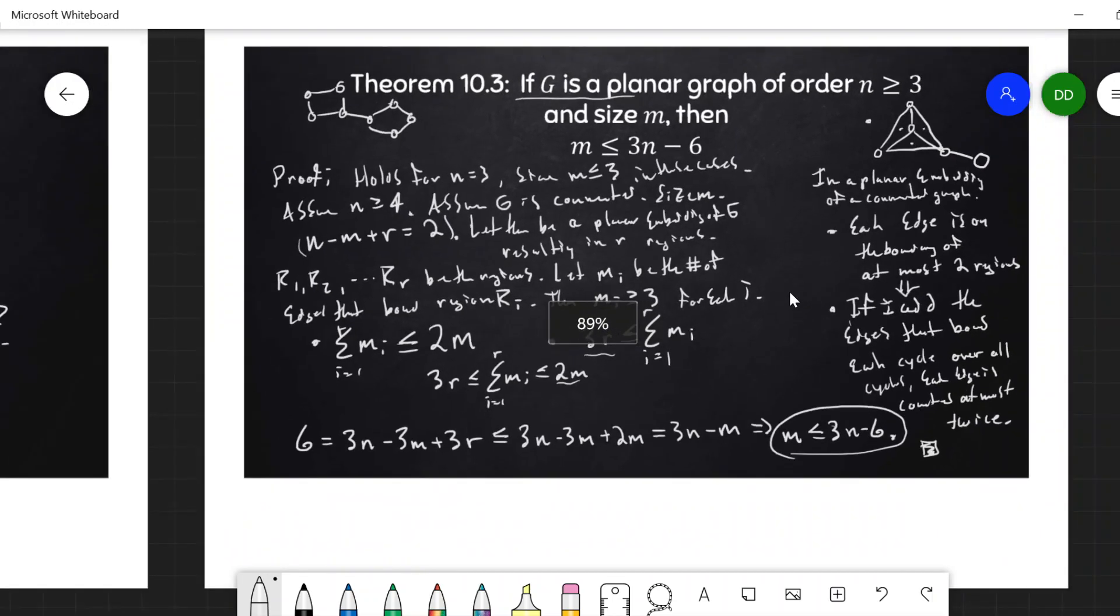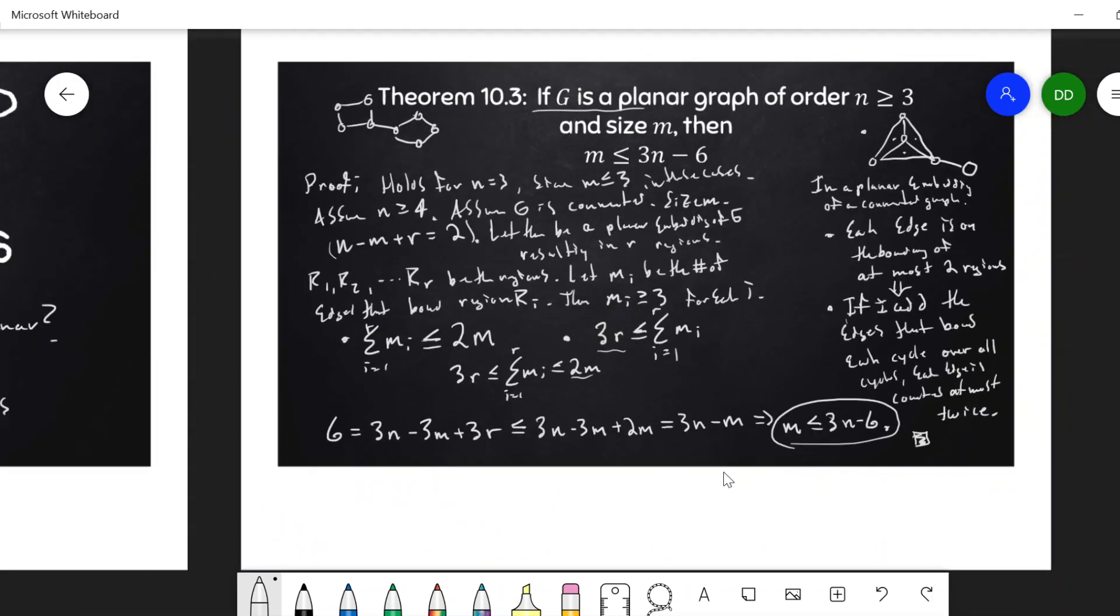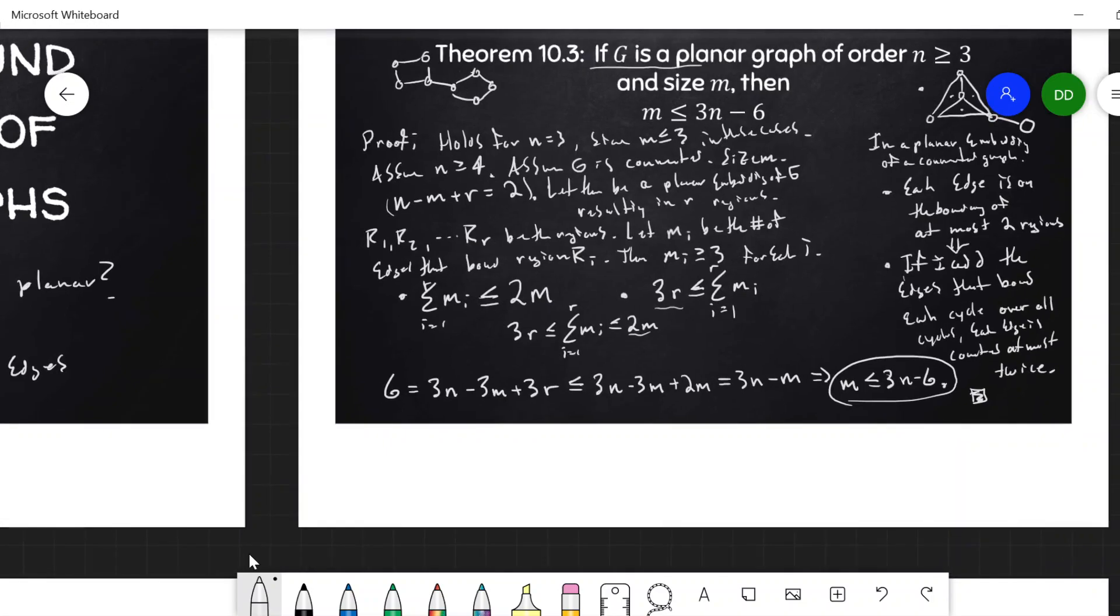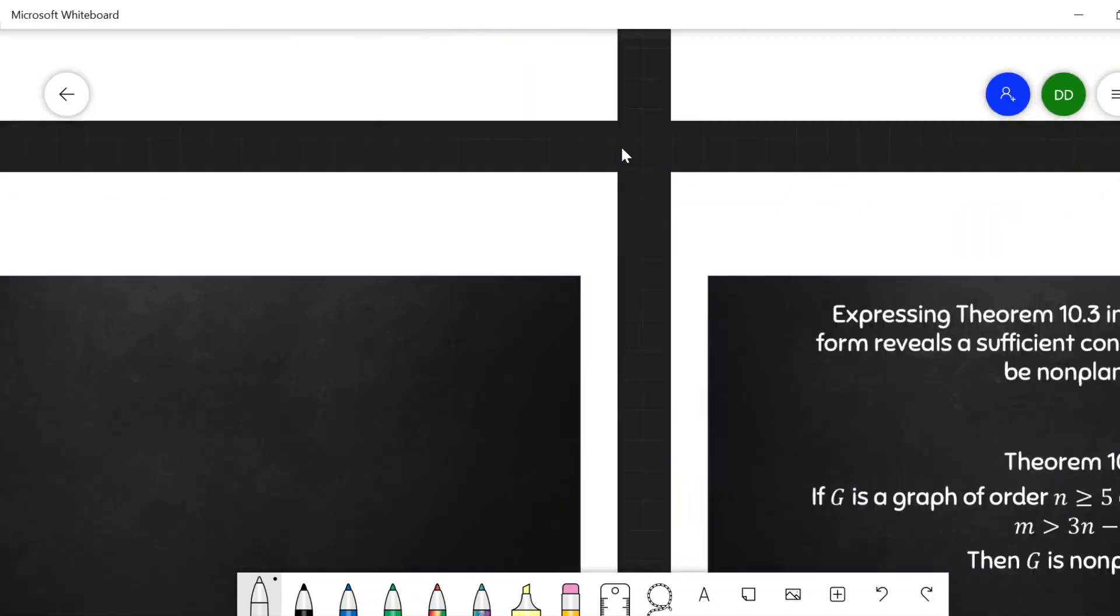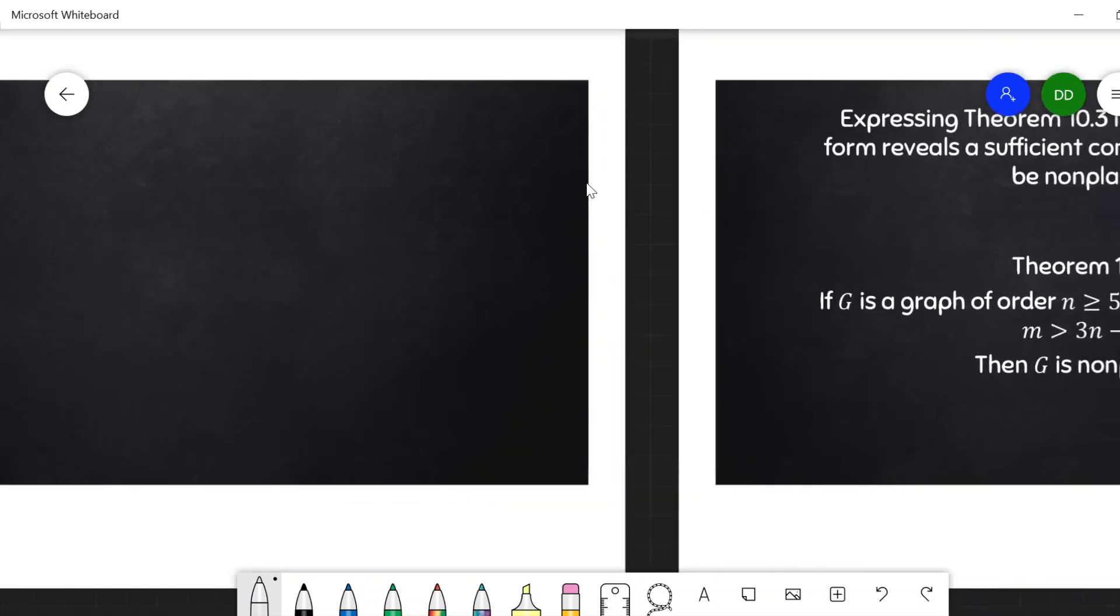So this is pretty neat. This tells me the most number of edges I can put into a planar graph. It's nice to think about this in its contrapositive form, because this can prove a graph is not planar, which again was a difficult task at the beginning.